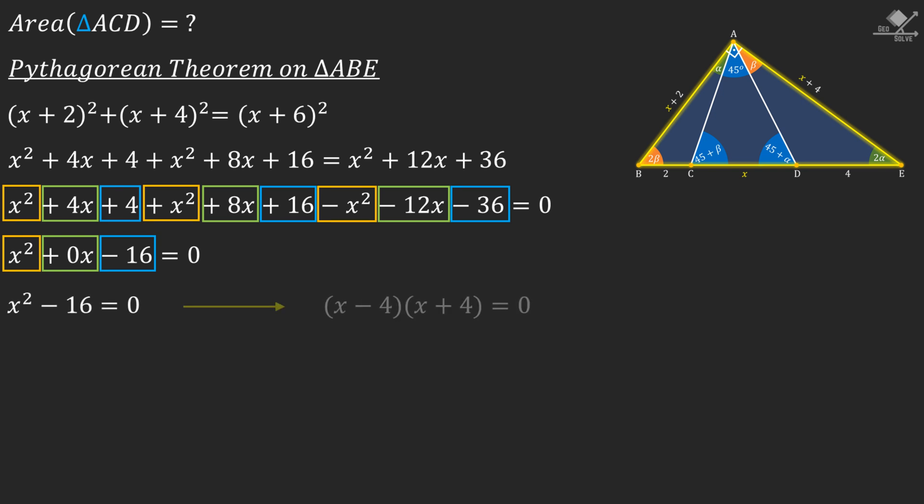Left hand side can be factored as (x - 4)(x + 4). So our solutions will be +4 and -4. Since side lengths cannot be a negative value we will accept x as 4 units.